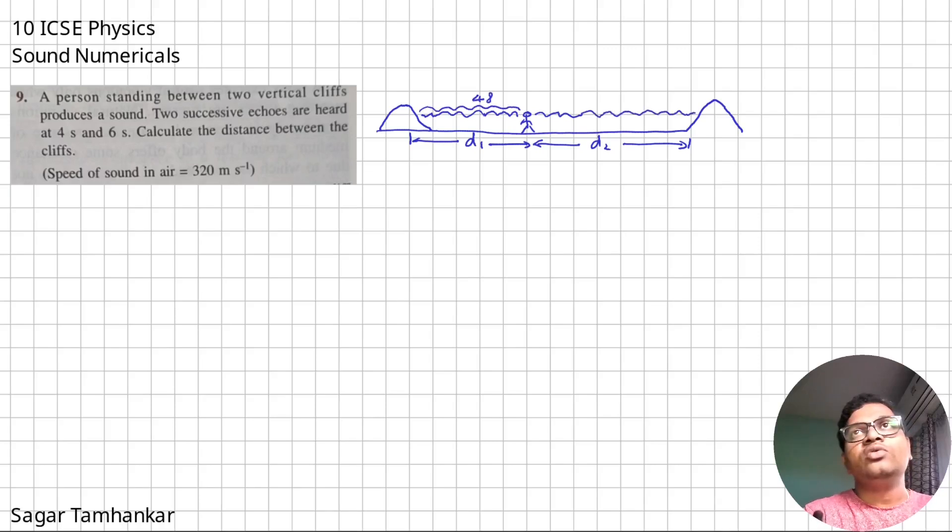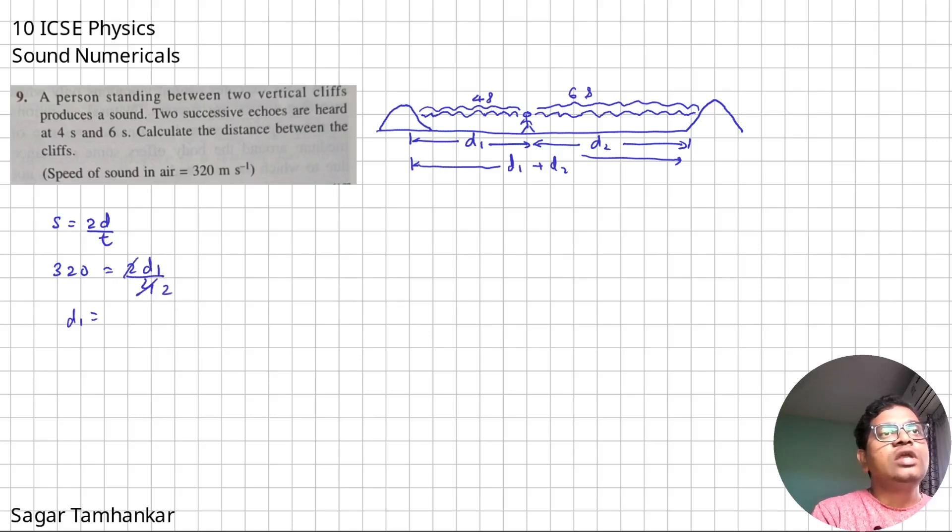And D2 from the second cliff. The sound that he produces goes in both directions. This sound goes and returns back in 4 seconds, whereas this sound goes and returns back in 6 seconds. They are asking us to calculate the distance, the total distance. So of course, the total distance is D1 plus D2. We're going to use the formula S equals 2D over T. Speed is given to be 320, so this is 2D1 upon 4. So D1 equals 320 into 2, that will be 640 meters.